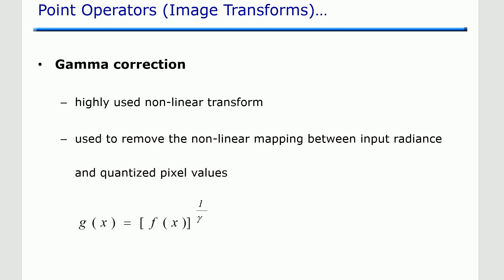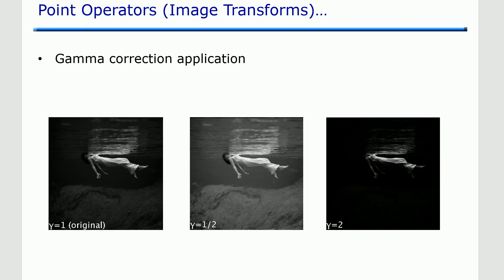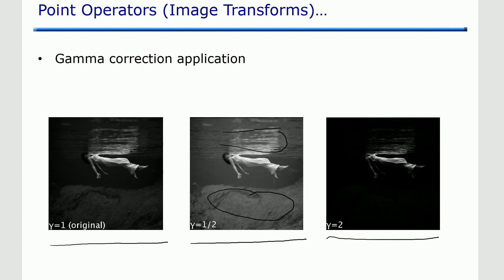One more application of the point operator is gamma correction, a highly used non-linear transform. Gamma correction is used to remove the non-linear mapping between input radiance and quantized pixel values. The equation is g(x) = f(x)^(1/γ). When gamma is set to 0.5 some details such as water levels become very clear, whereas when gamma is increased to 2, those details vanish. Depending on the value of gamma, certain details can be hidden or extracted in the output image.